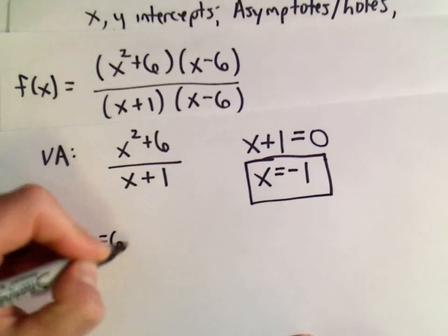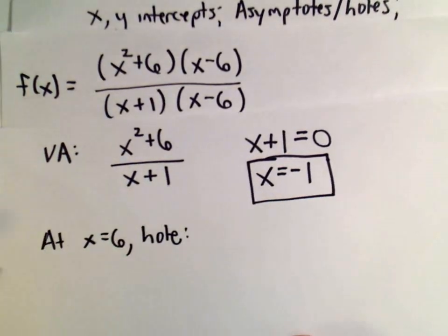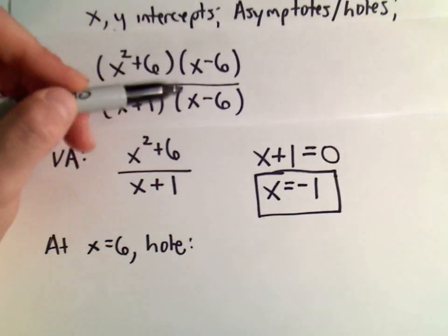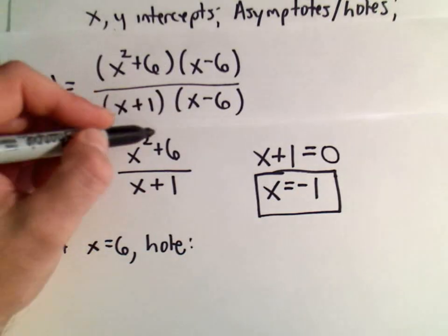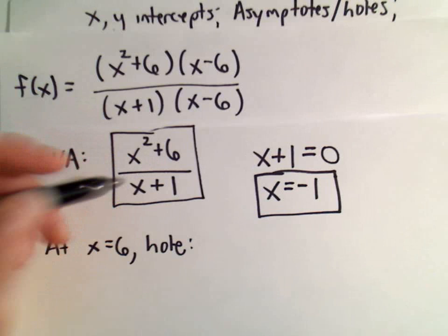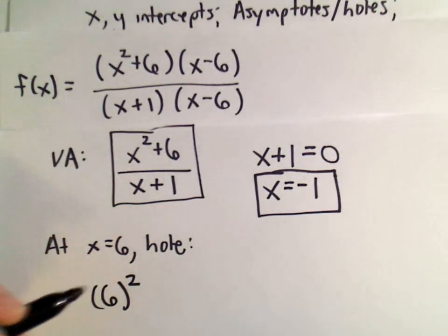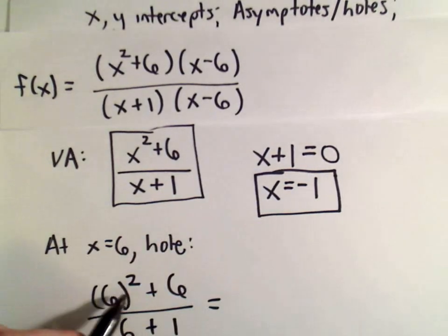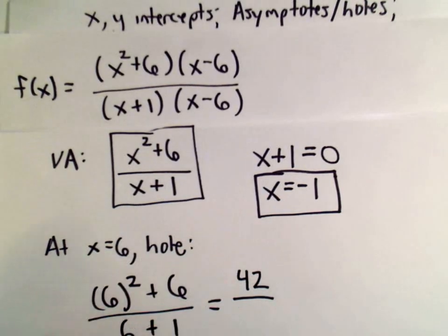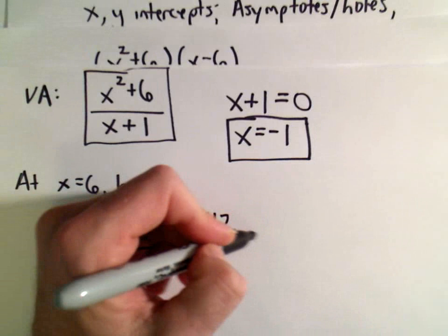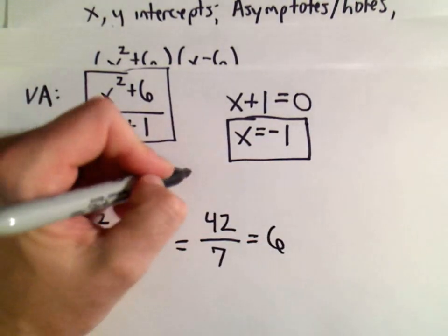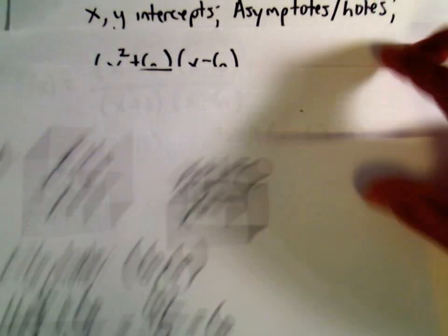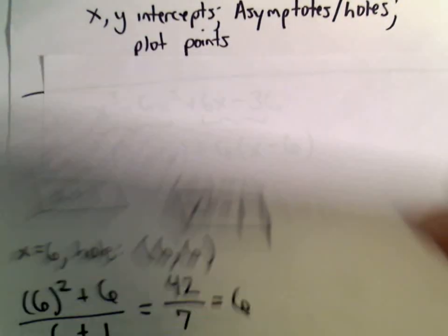At x equals 6 there's a hole. To get the coordinates of the hole, we cancel the common factors and look at the remaining simplified expression x squared plus 6 over x plus 1, then plug in x equals 6. We get 6 squared plus 6 over 6 plus 1, which is 42 over 7, giving us 6. So the coordinates of the hole are at (6, 6).